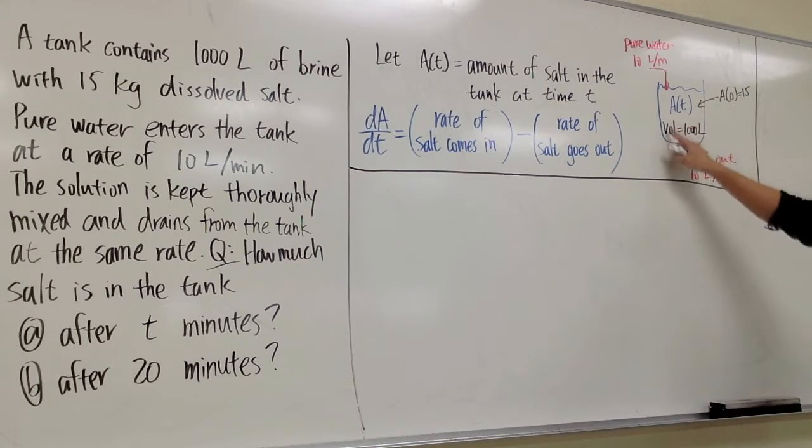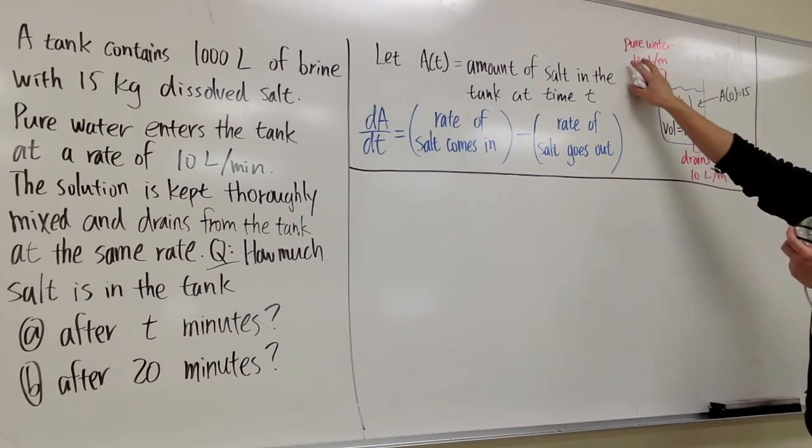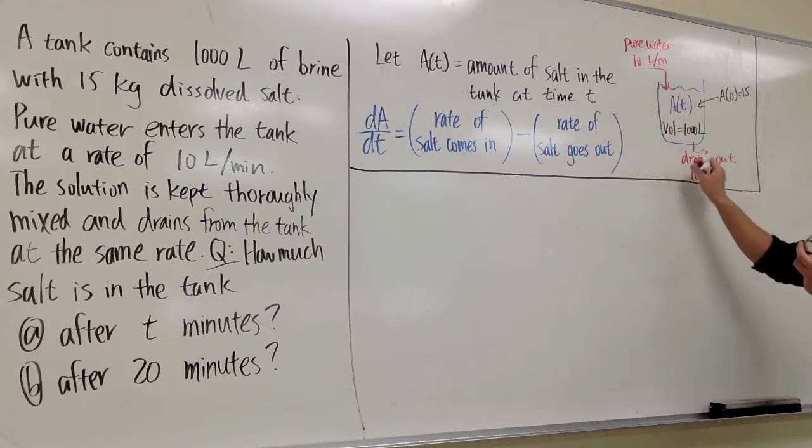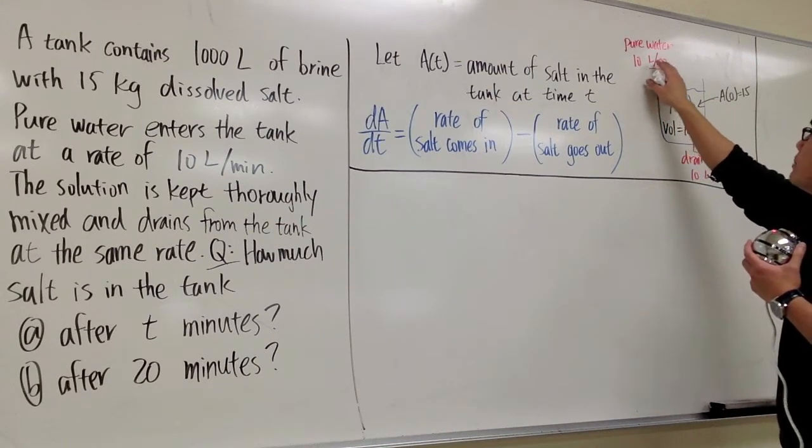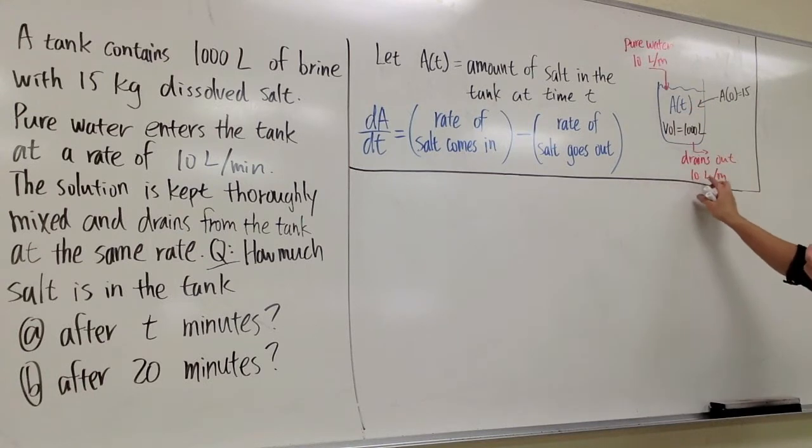And notice that I also wrote down the volume of the solutions in the tank. It's always going to be 1000 liters. Because even though we have water goes in, but then we also drain out the solutions. And they happen to be at the same rate. 10 liters per minute goes in. 10 liters per minute of the solutions goes out. So the volume will stay inside, which is 1000 liters.